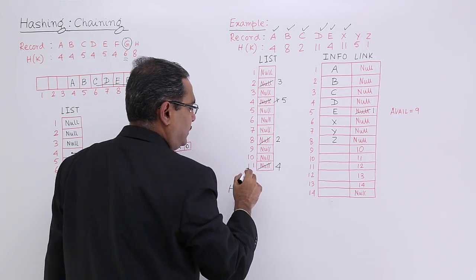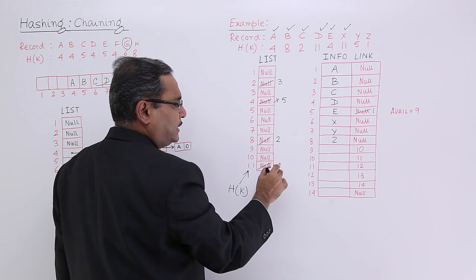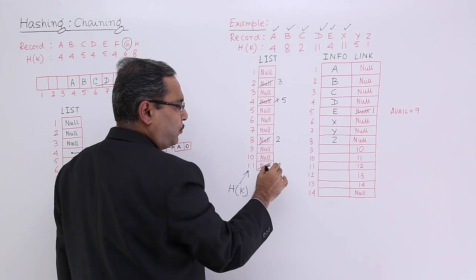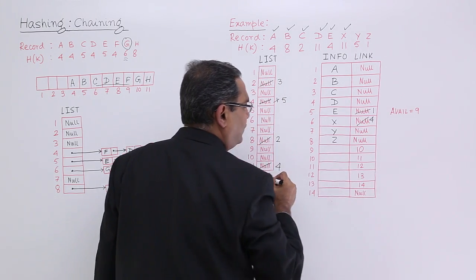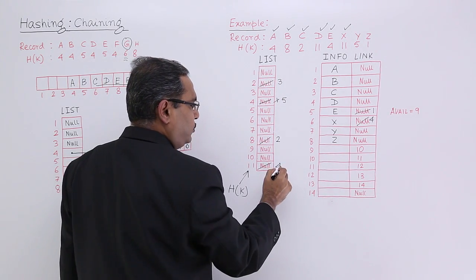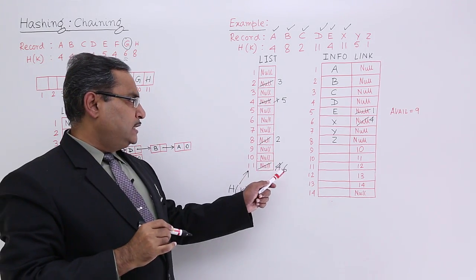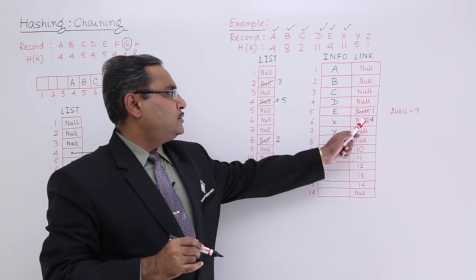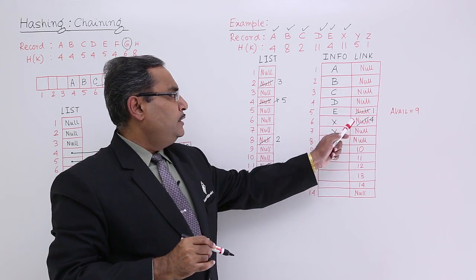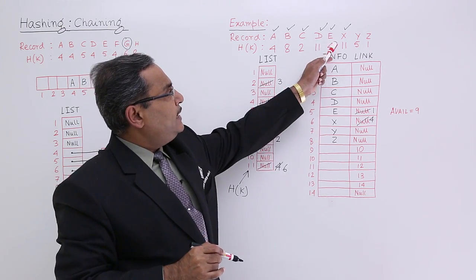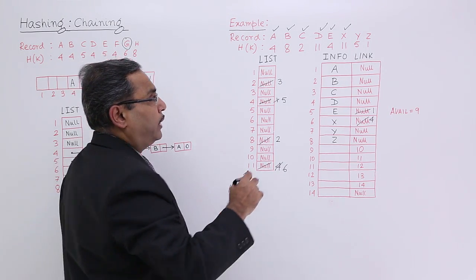Now, going for X, 11. At the 11th location, X has address 6. I should put this 4 at location 6 link, and then 6 will be coming here. That means this particular X has got prepended and the next node is D which is pointing to null. Now you see X and D. Yes, D and X both are having the same h of k, that is 11.